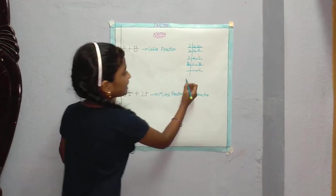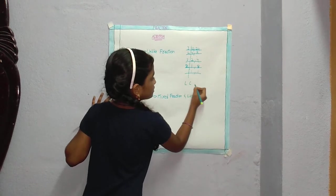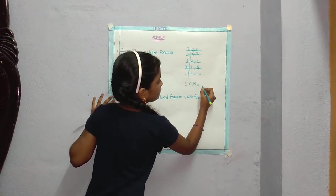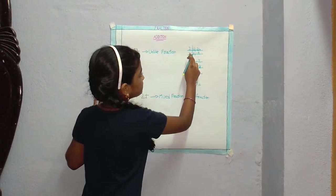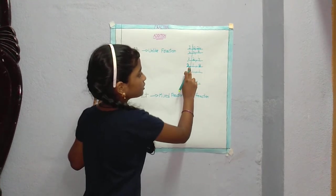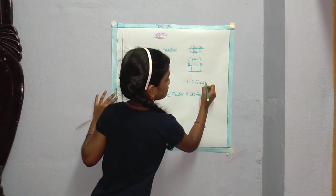Bring down, 2 times 1 is 2. And LCM is equal to 3 times 2 is 6, 6 times 2 is 12, 12 times 2 is 24. LCM is equal to 24.